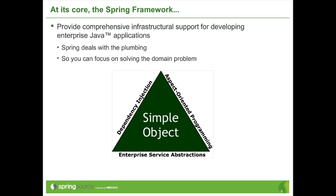At its core, the Spring framework is several things — we talk about this triangle quite a bit. It's a way to remove tedium and the plumbing code you don't want to concern yourself with. Most applications have an intrinsic amount of complexity related to the problem they're trying to solve, plus extra complexity introduced by the technology choice. With the Spring framework, we try to make it so that intrinsic complexity is the only complexity. The premier component for solving solutions is a regular Java object — we elevate that to the first-class citizen it should be.